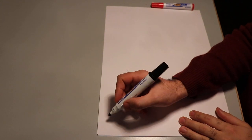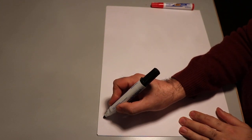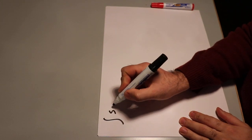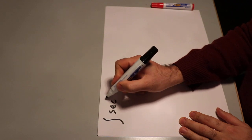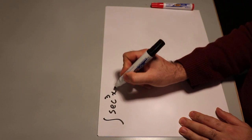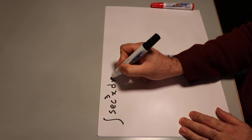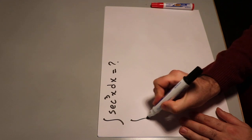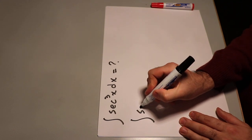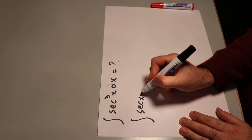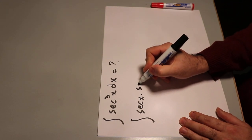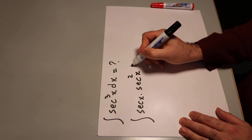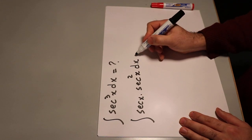Hello everybody, today I'm going to show you how to calculate the integral of secant³x dx. So you can write this integral as secant x times secant²x dx.